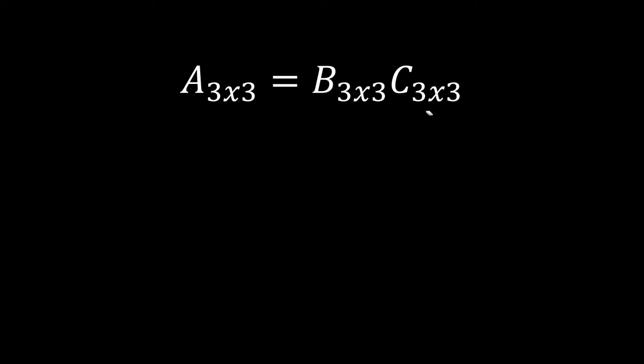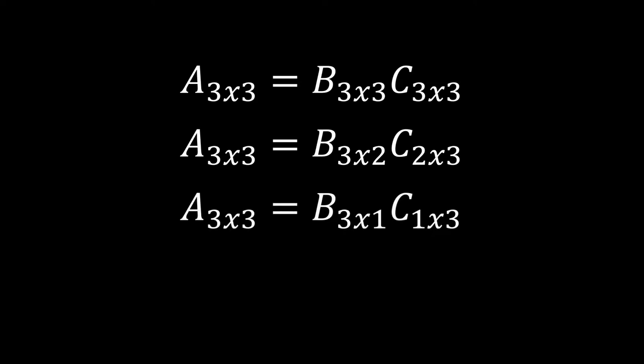But this isn't the only matrix decomposition that we can do. We could do a 3 by 2 matrix multiplied by a 2 by 3 matrix. Everything works out and we still get a 3 by 3 matrix out. Or we could do a vector and a co-vector. If we want to more generalize this, as long as we want a 3 by 3 A matrix decomposed, we can really break it into any two matrices that are 3 by N by N by 3.